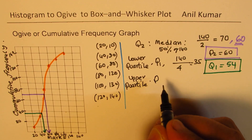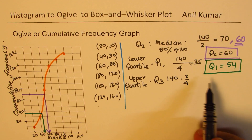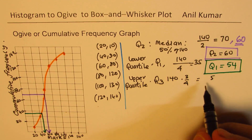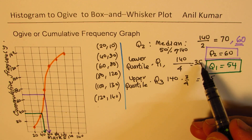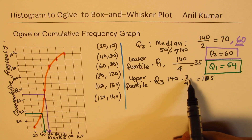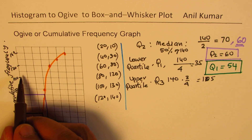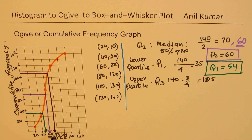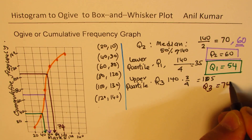Now for the upper quartile Q3, that is the 75th percentile. We calculate 140 multiplied by 3 over 4, which gives 105. Looking for position 105 on the cumulative frequency graph — that falls between 100 and 110. Reading across, we get a value slightly more than 70, so Q3 is approximately 74. Remember these are estimates read from the graph.